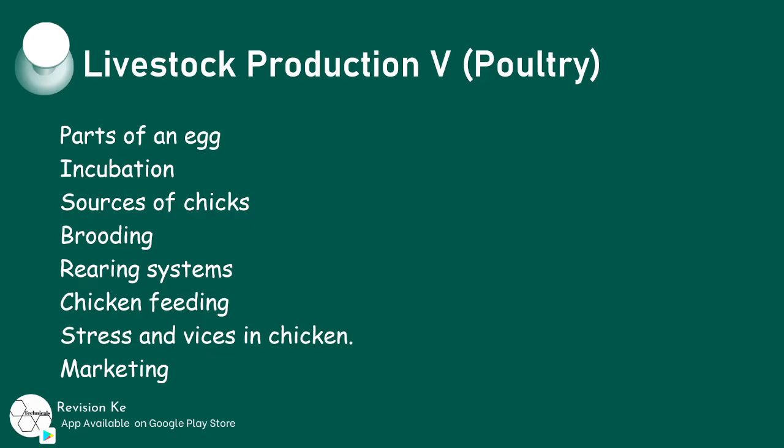We're going to identify parts of an egg, select eggs for incubation, identify suitable sources of chicks, describe broodiness and natural brooding, describe brooder and brooder management, and describe conditions necessary for artificial incubation, as well as describe rearing systems.